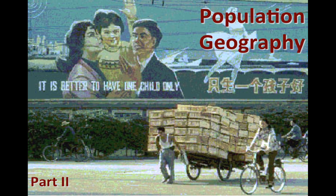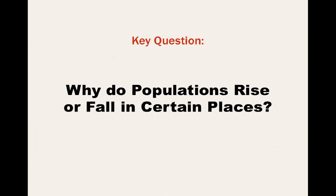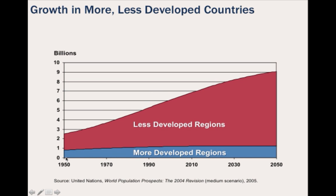Welcome to Population Geography Part 2. In this video, we're going to address this key question: why do populations rise or fall in certain places? Take a look at this graph. You can see the more developed regions of the world, like the United States, Western Europe, and Japan, are seeing very low, if any, growth going into the future. And then you see the less developed regions of the world, where the vast amount of growth has occurred and will continue to occur into the future.